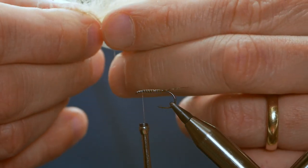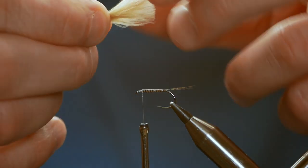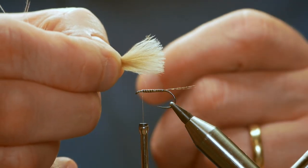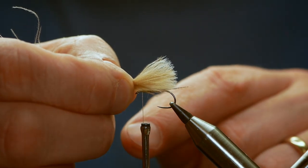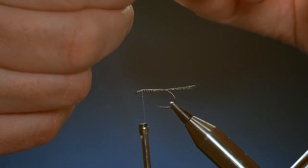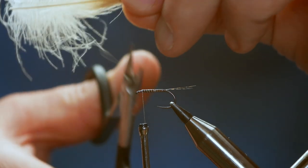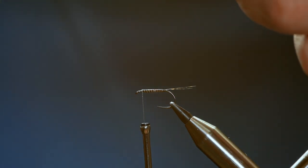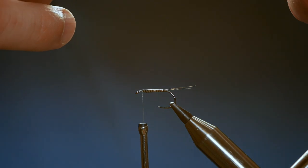I'm just taking my time now to make sure the tips are aligned. I want all the tips in line. I don't want my CDC coming much more than an eighth of an inch past the bend of the hook. So that looks all right where it is. I'm going to transfer over to my other hand and then cut away my excess.